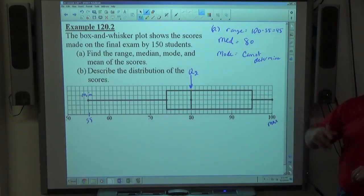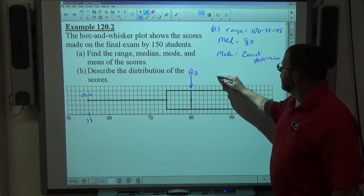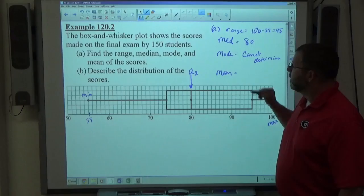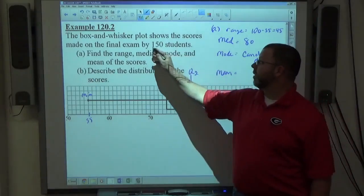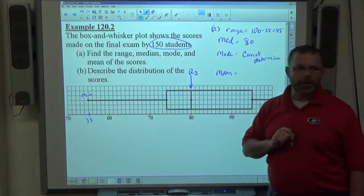I have no idea what anybody made on this test. I know somebody made 100, somebody made 55, beyond that I don't know. Finally, the mean. Okay, there are 150 students, right? That's good. What else do we need to know to find the mean?